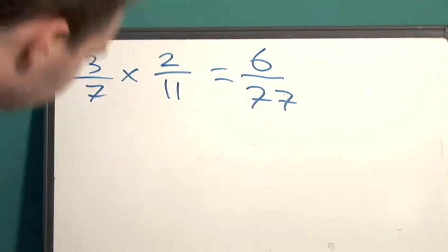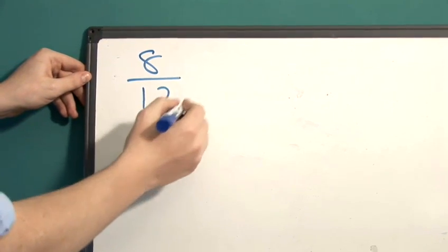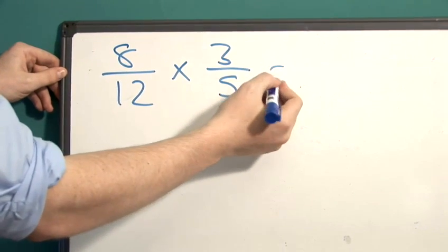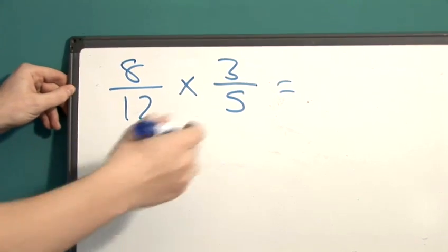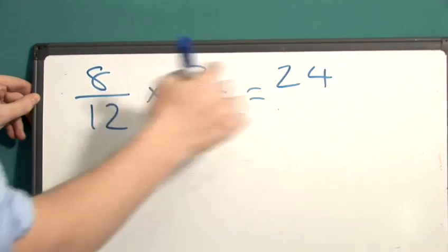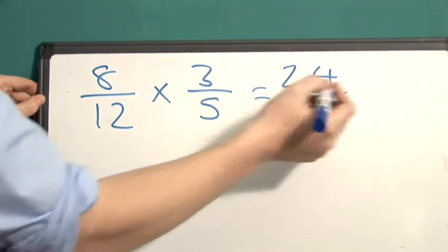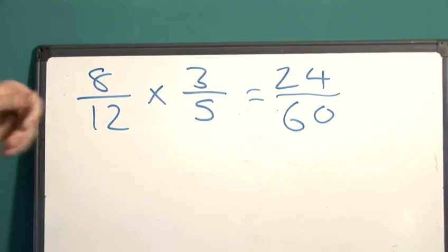Let's try another example. Let's try eight over twelve multiplied by three over five. Once again, multiply the numerators together. It gives us twenty-four. That's what eight times three gives us. Then we find our denominator. Twelve times five is sixty and we're given our answer.